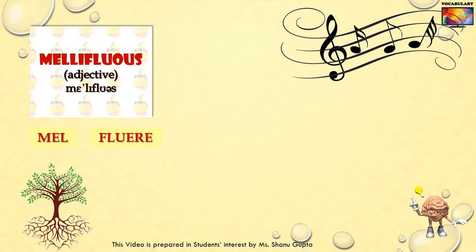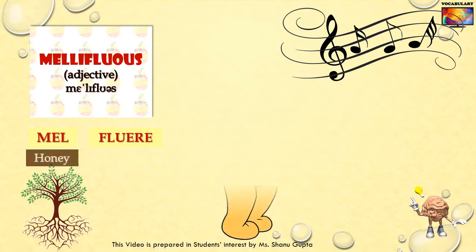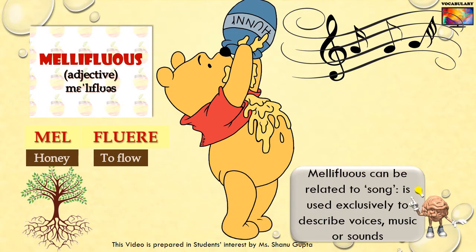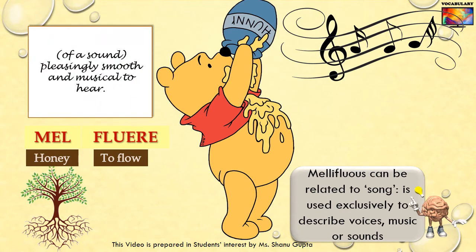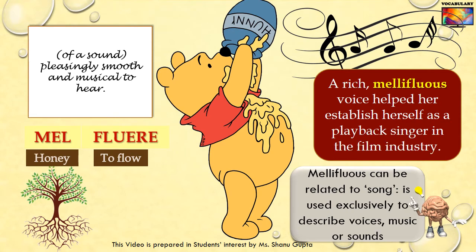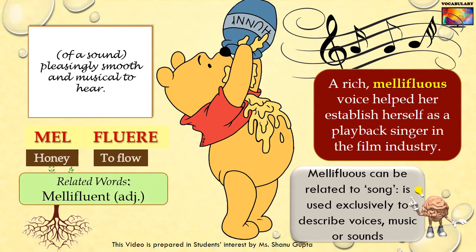Sometimes roots can be deceptive. Mellow means song, but mel means honey. Because mellifluous is a very common word in most exams, it is better to memorize it directly. Mel means honey and fluere means to flow, so mellifluous describes something that flows smoothly like honey. The word mellifluous is used almost exclusively to describe voices, music or sounds that flow sweetly like honey. Example: A rich, mellifluous voice helped her establish herself as a playback singer in the film industry. A related word, mellifluent, is another adjective and is in fact another term for mellifluous.